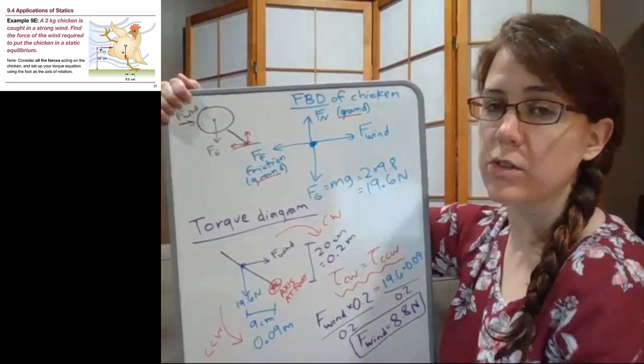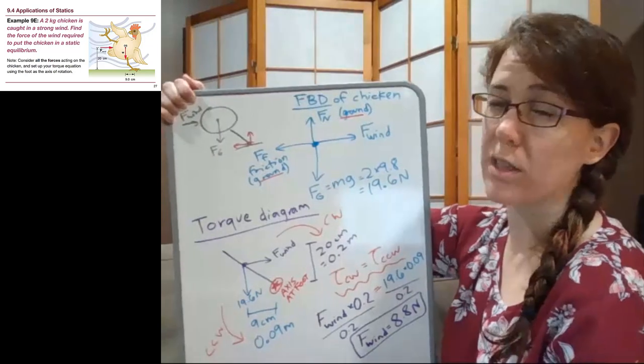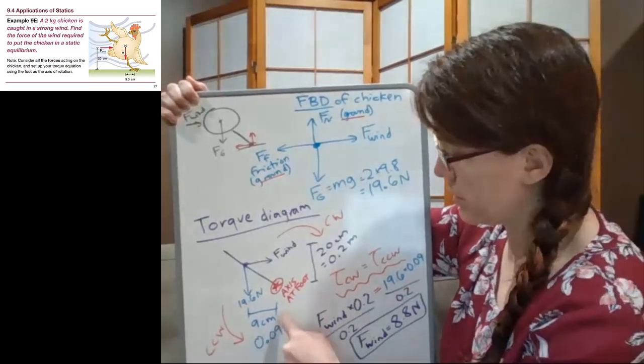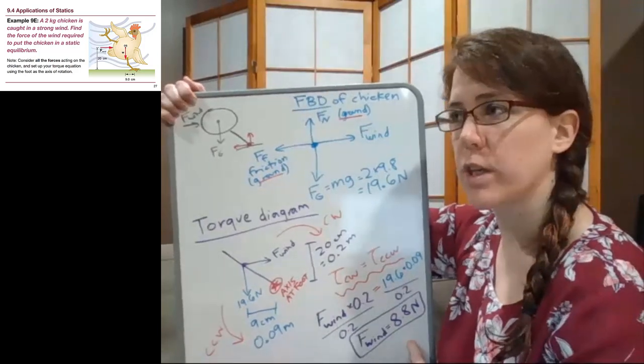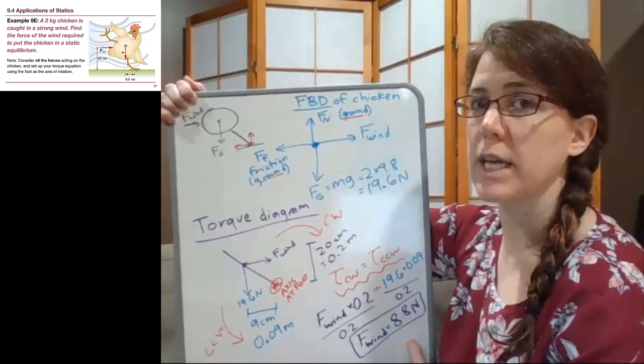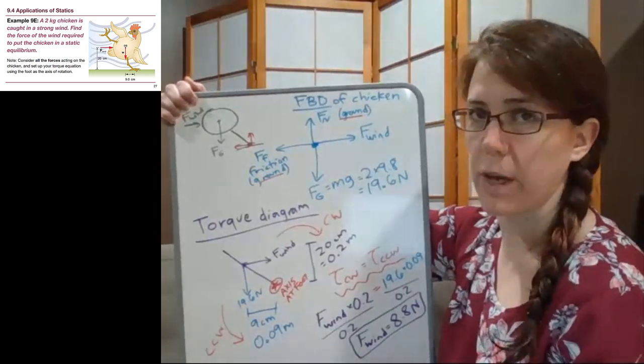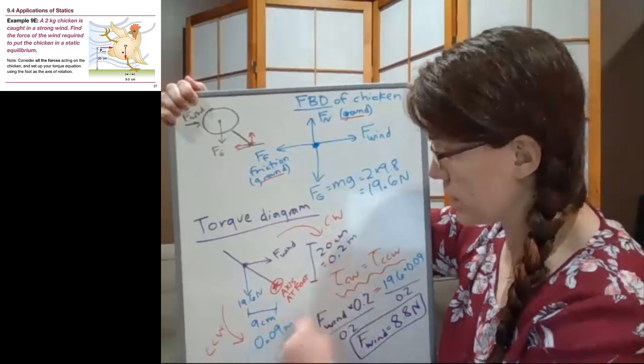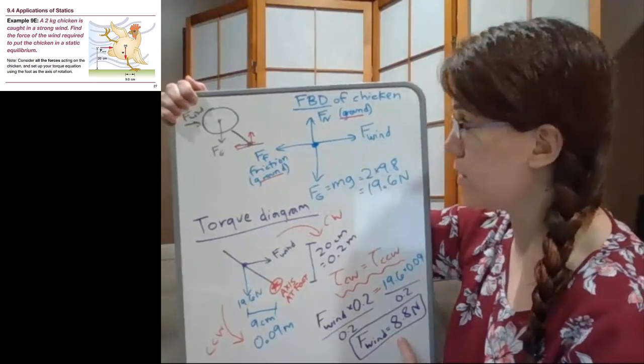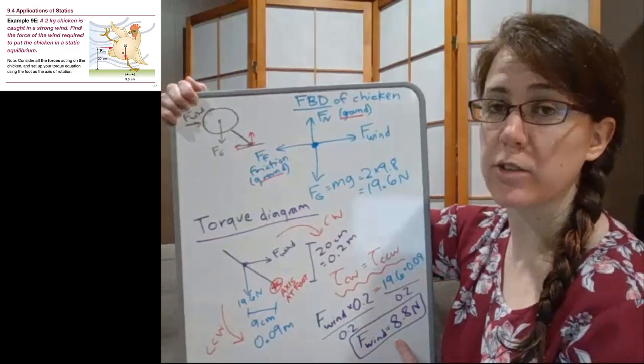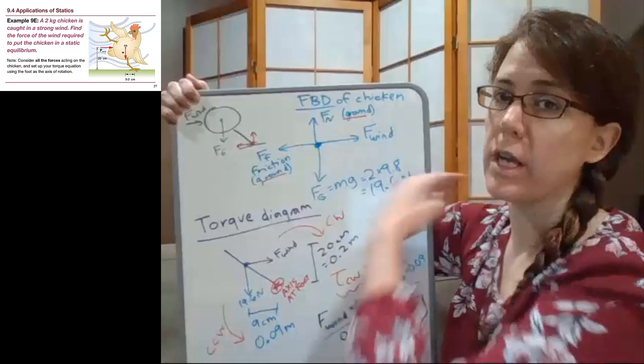What you may notice here is that as long as the distances are all consistent, we could have kept this in centimeters and gotten the same result. We do want to try to train ourselves to stay in standard units in case we have to do something else with them, but as long as everything's consistent that would have cancelled out either way. So the force of the wind here is 8.8 newtons. Any stronger, the chicken blows over, and any weaker, the chicken is able to set its foot back down onto the ground.